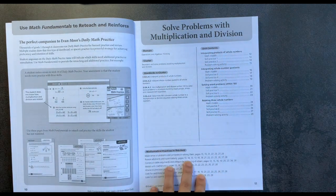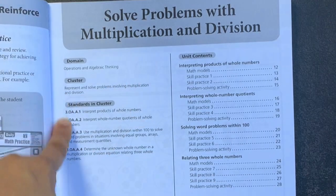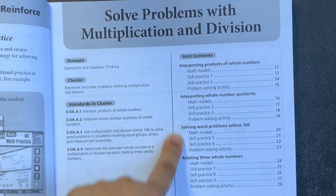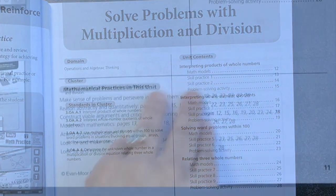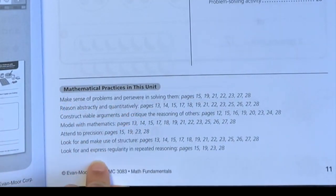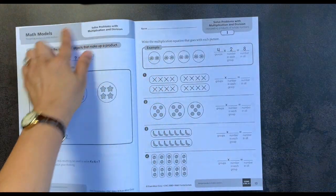you will notice that you have the domain, the cluster, the state standards in the cluster, and then you have the unit contents with their page numbers as well as the different mathematical practices in this unit laid out in plain English. When you start this section, again, this entire page is a math model meaning it is an example of what is going on.